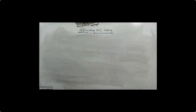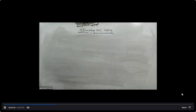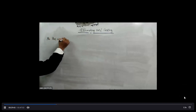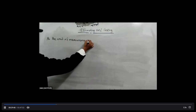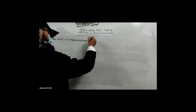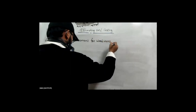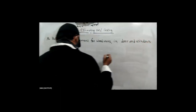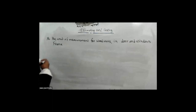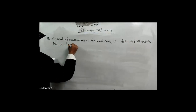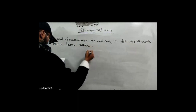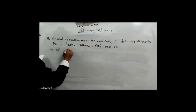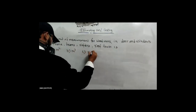Let me ask the question. The unit of measurement for woodwork in door and window frame, doors and windows, beams, rafter, roof, cross. Options: meter square, meter cube, running meter, lump sum.